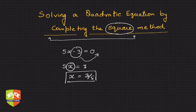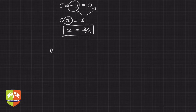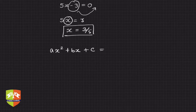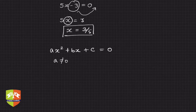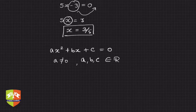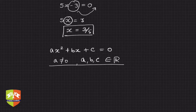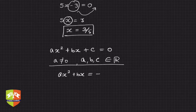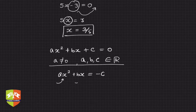Now, the problem with a quadratic equation: a quadratic equation is of the form ax² + bx + c = 0, where a is not equal to 0 and a, b, c all belong to the set of real numbers. Even if you separate the variable terms on one side — ax² + bx — and take c to the other side as minus c, the problem is there is an x² term and an x term.